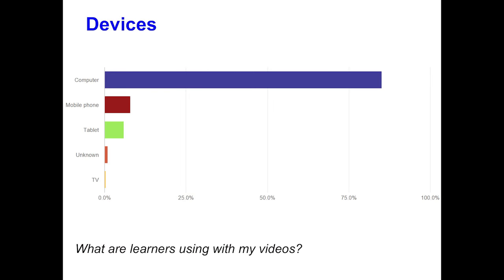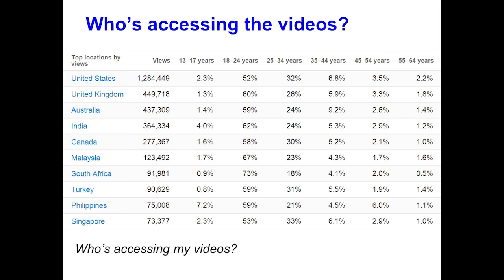What are people looking at these resources on? Over an eight or nine year period the computer is still king, but over the last four years mobile devices have increased year on year — about 15% of the traffic is now mobile devices and it's growing. So any kind of resources you produce need to be mindful of little screens and mobile devices. Here's some more analytics — you can see the viewers by country. Australia is massively over-represented at number three, and the 18 to 24 age group is the most popular one. You can see who's accessing your resources, how old they are, whether they're male or female, where they live.